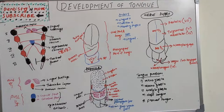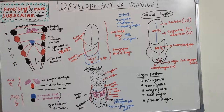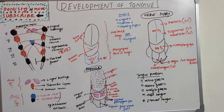Hello everyone, welcome back to another session in dentistry. Today we have a new topic in anatomy: the development of tongue. We had covered a part of tongue in dental histology, specifically the papilla and epithelium of tongue. This video is about how the tongue develops from the pharyngeal arches, which we covered in anatomy in the previous session in detail.